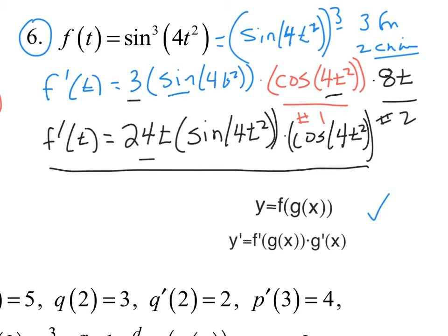Actually, there is a mistake — I forgot to raise to the one less power, so there should be a squared on the sine of 4t squared. If you caught that, great. If not, try to stay a step ahead of me and test yourself — you'll learn more that way.